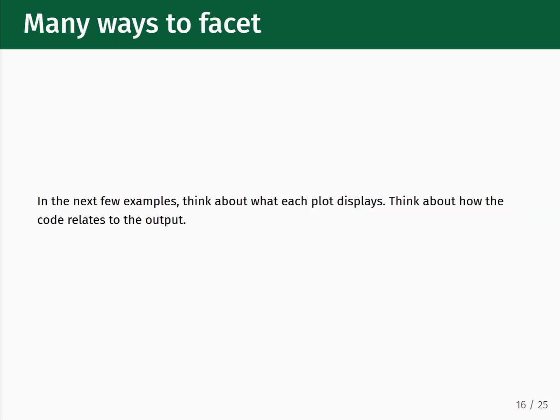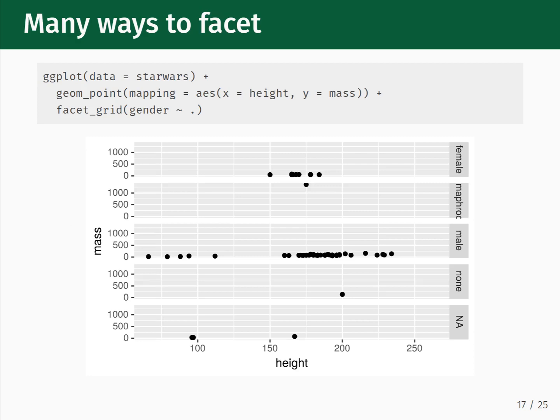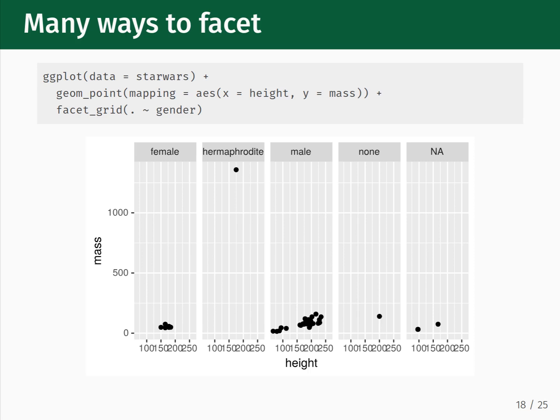There are several ways to create a faceted plot in ggplot2. In the next few examples, think about what each plot displays and how the code relates to the output. This first example displays gender as the third variable, and the faceting is carried out using the function facet_grid. Inside the parentheses is gender ~ dot, and doing this produces rows of facets in a single column. The next example we have seen before — we are faceting over gender again using facet_grid, but in the parentheses it now says dot ~ gender, and this creates facets arranged in one row and five columns. When you use facet_grid, whether the dot is on the left or the right of the tilde impacts how the facets are arranged.